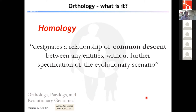Homology is simply the designation of a relationship of common descent between any entities. There is no further explicit specification of any evolutionary scenario — it simply posits that entities have evolved from a common ancestor and share common ancestry. I recommend this review by Kunin from 2005 in Annual Reviews in Genetics, which very elegantly summarizes the relationships between homology, orthology, and paralogy and their use in evolutionary genomics.